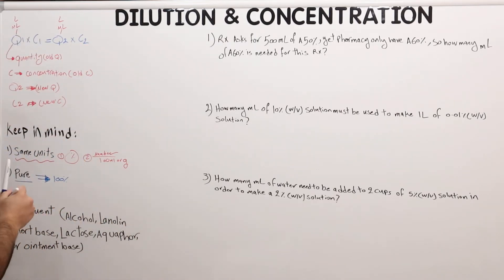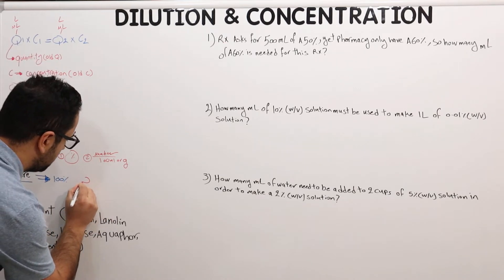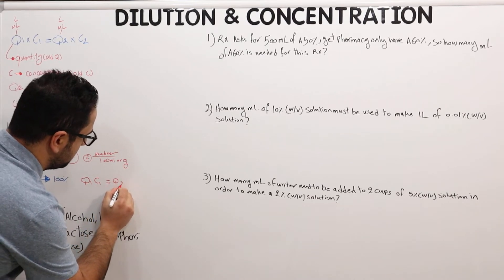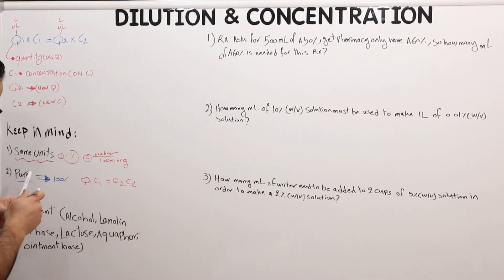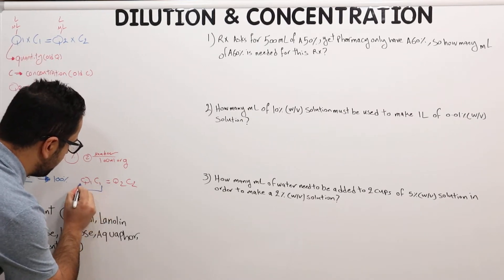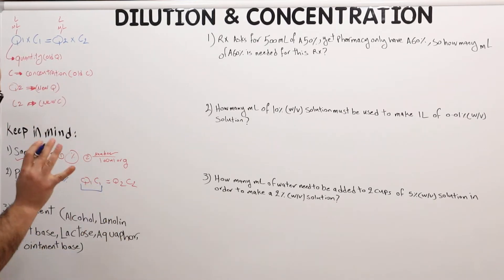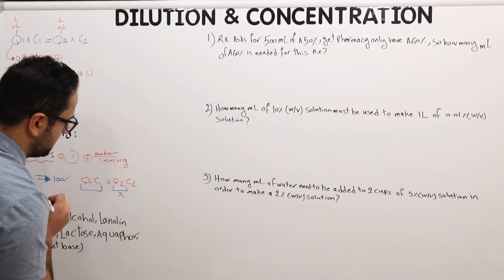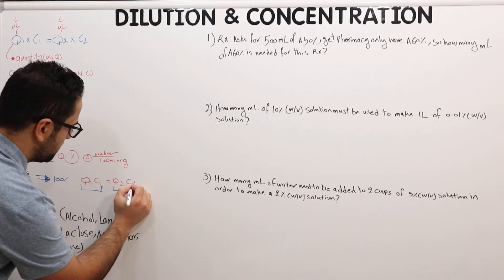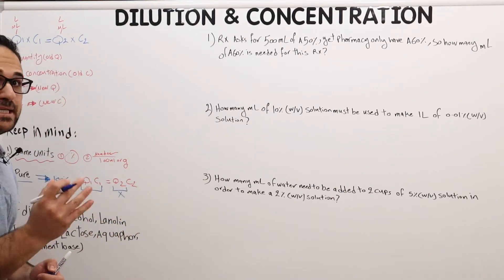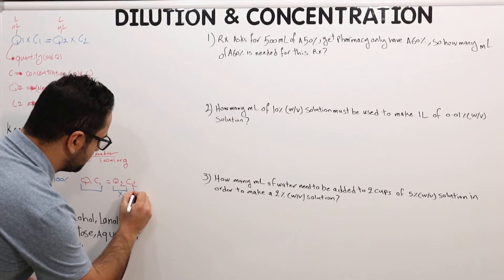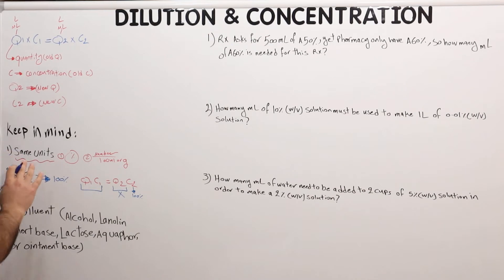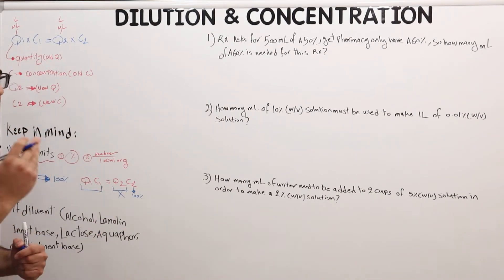If a question gives you Q1 and C1 but doesn't have C2, and asks for a quantity, but states it's a pure ingredient — then C2 is 100%. In Q1·C1 = Q2·C2, if these two are given and Q2 is unknown, you plug in 100% for C2. Keep that in mind if you see this in a question or prescription.